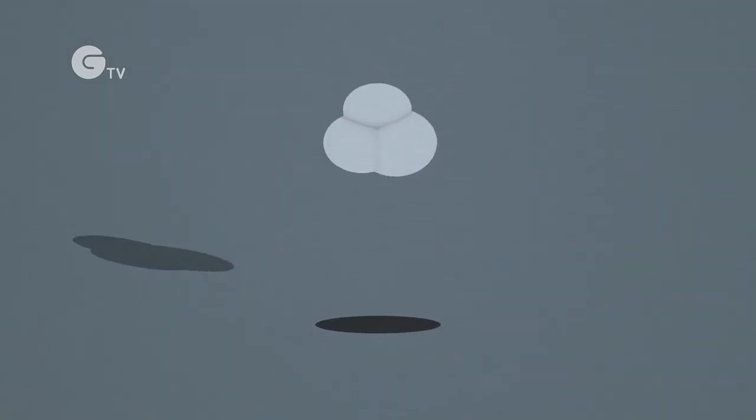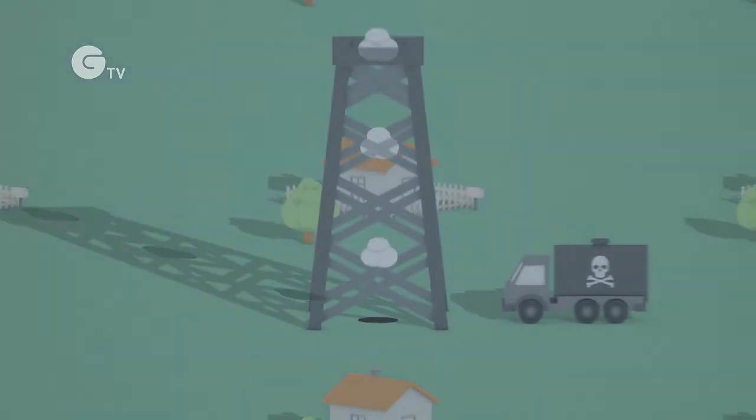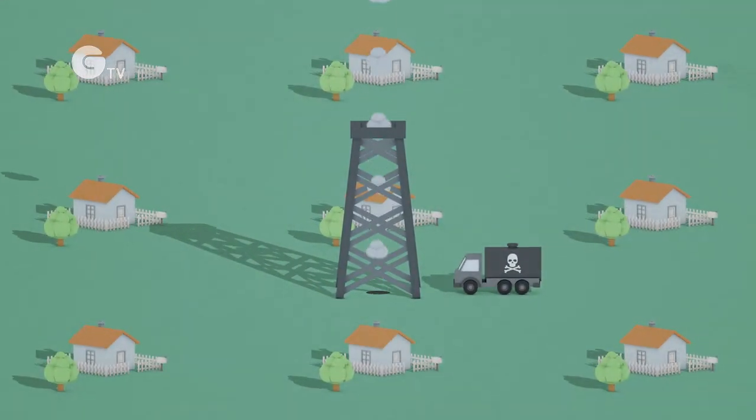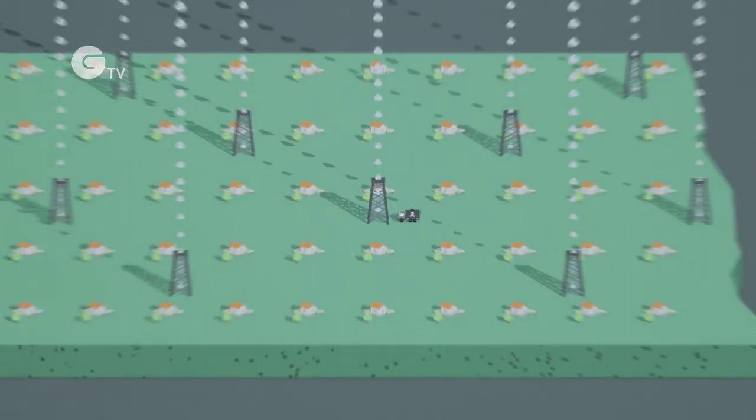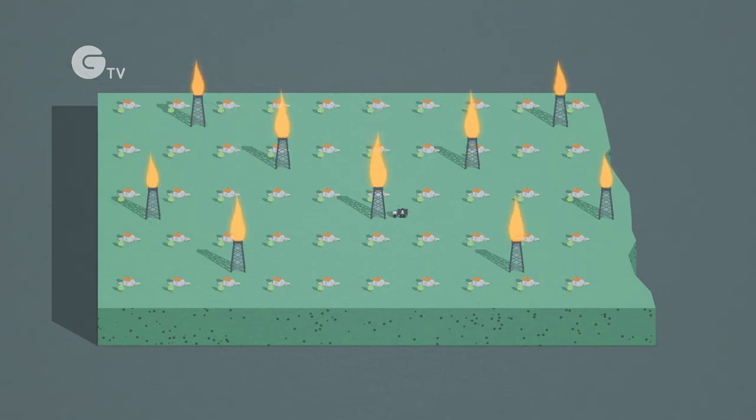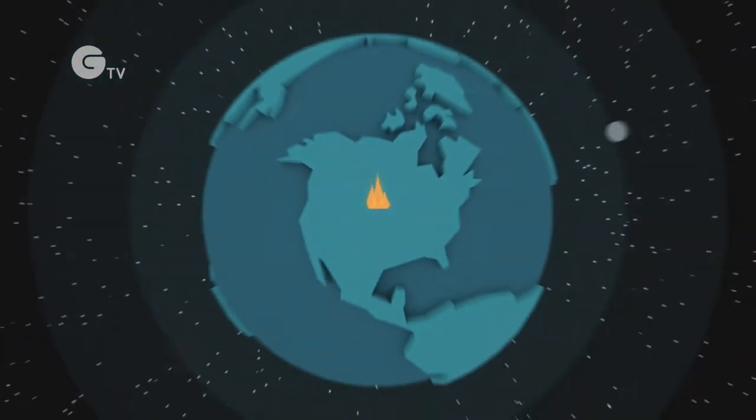The industry conceals the exact amount of methane that escapes during fracking. But in North Dakota, where fracking is done primarily for oil, the methane is released and burned off in such great amounts that it's visible from space.